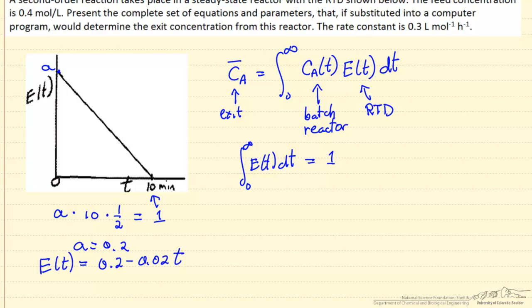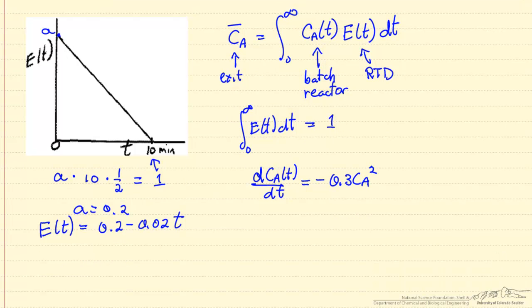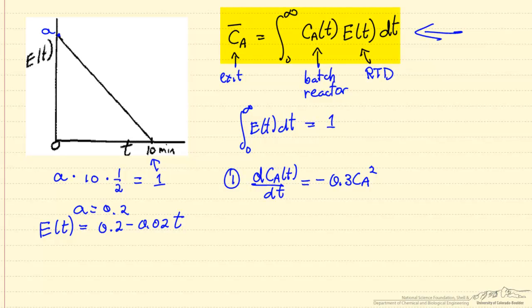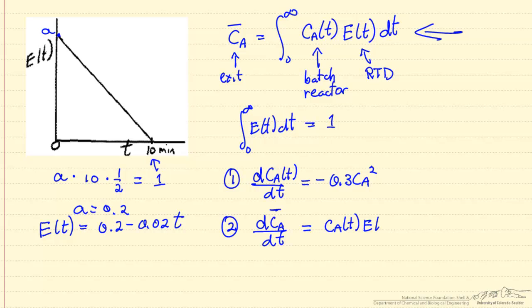The batch reactor equation gives the change in concentration in the batch reactor as a function of time, and this change in concentration is just the rate of reaction, which is second order. So we're going to solve this differential equation, and convert the integral expression into a differential equation: the change in average concentration with respect to time equals Ca(t) times E(t).